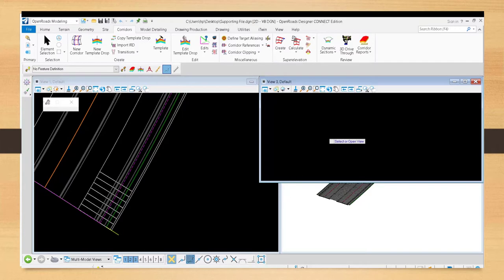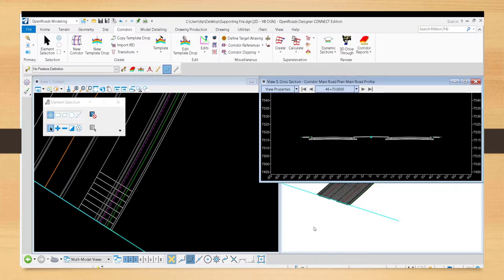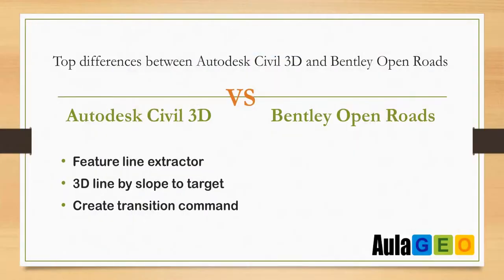The create 3D line by slope to target tool is the same as creating a grading criteria in Sable 3D, although later you would have to add the lines as a break line — something that Sable 3D does a little more automated by already creating the grading surface. However, in OpenRoads you can make a slope transition.